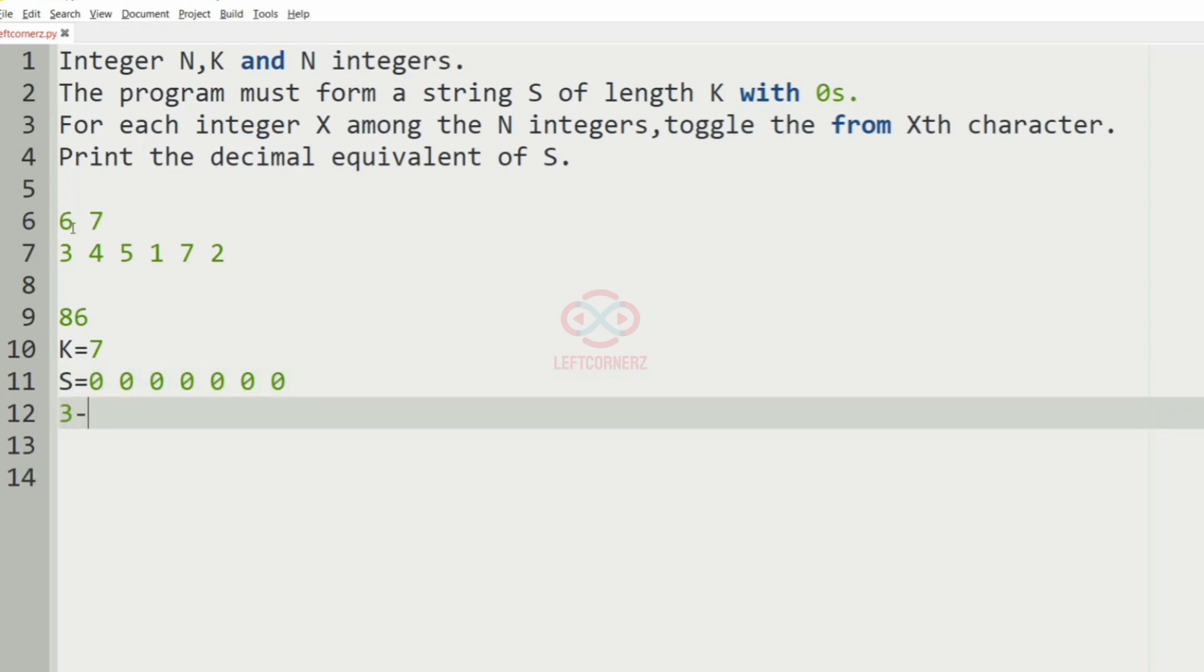And then we have three so we'll toggle from the third position. So it is 1 1 1 1 1.